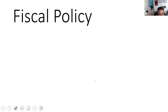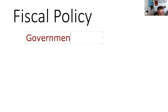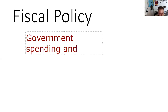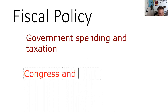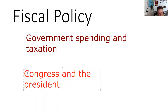Fiscal policy — test question — is government spending and taxation. And the test question is that fiscal policy is controlled by Congress and the President. Monetary policy is the money supply controlled by the Federal Reserve Board. Fiscal policy is government spending and taxation controlled by Congress and the President.